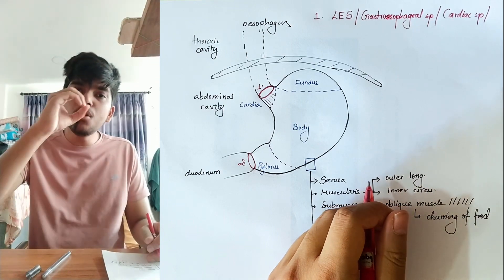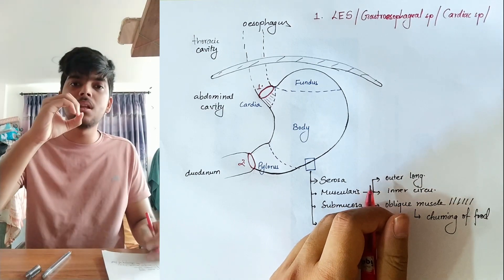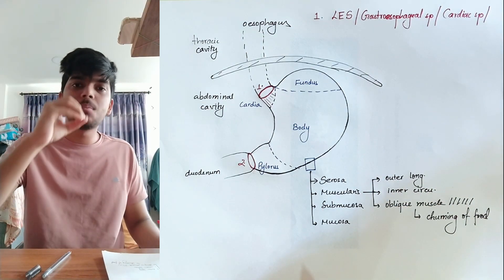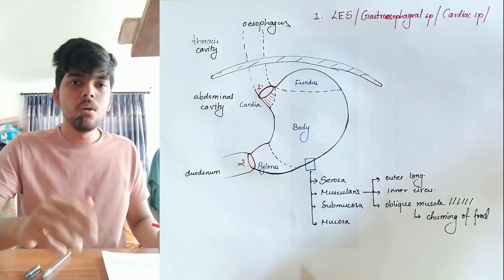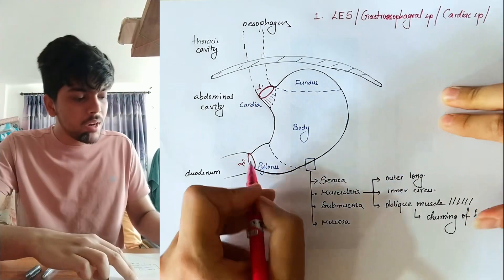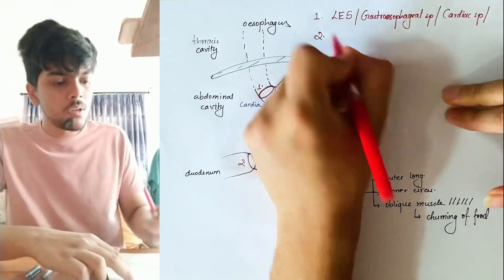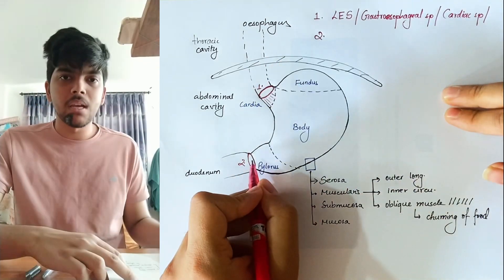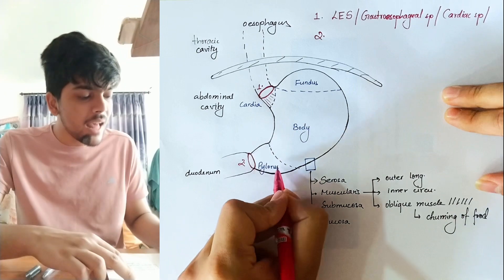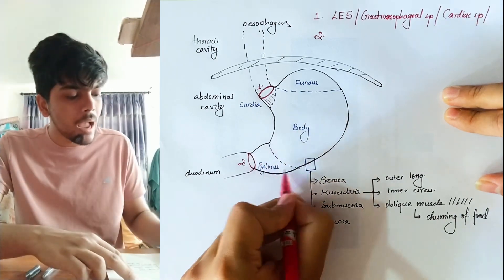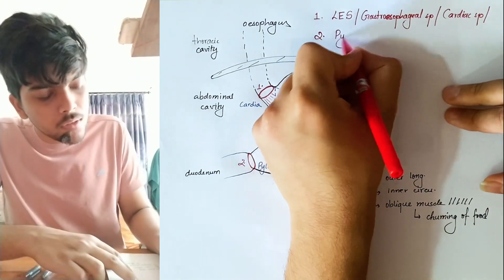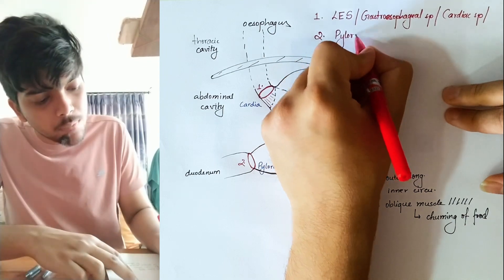A sphincter is a circular muscle that can close and open as per the requirement of the organ. The second sphincter, present at the end of the funnel-shaped pylorus of the stomach, is known as the pyloric sphincter.